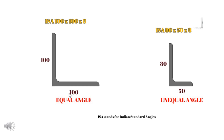There are two types of angle sections. One is ISA 100 into 100 into 8. ISA designates Indian Standard Angle. This is an equal angle. The next is ISA 80 into 50 into 8. This is an unequal angle section. The dimensions are specified in millimeters.